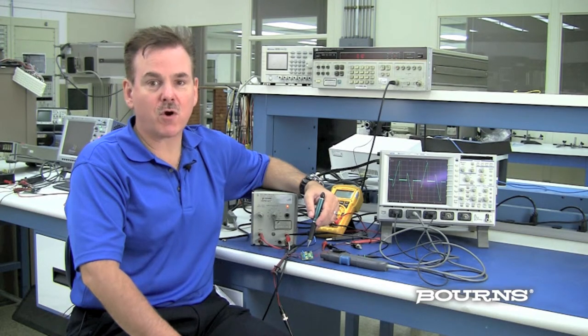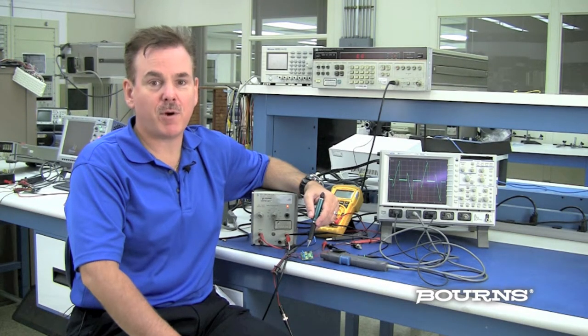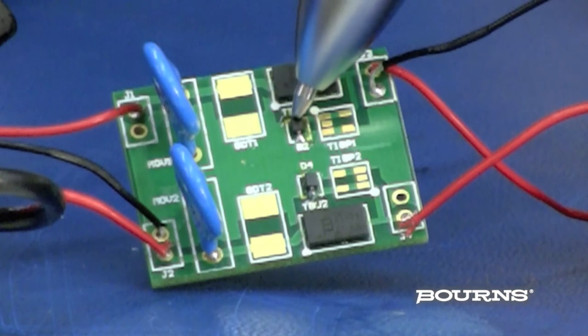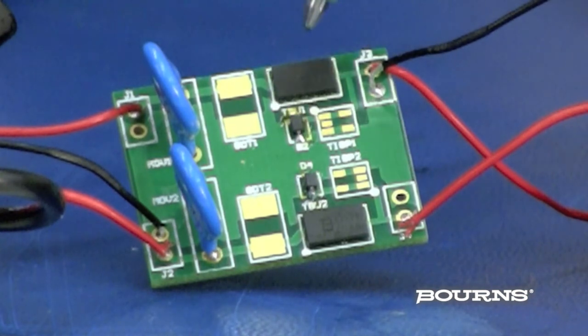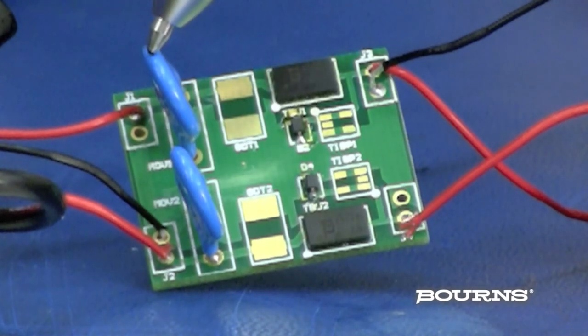In review, this evaluation board provides over-voltage and over-current protection utilizing three components: TVS diode as secondary element, TBU high-speed protector as coordinating element, and MLV as primary protector.